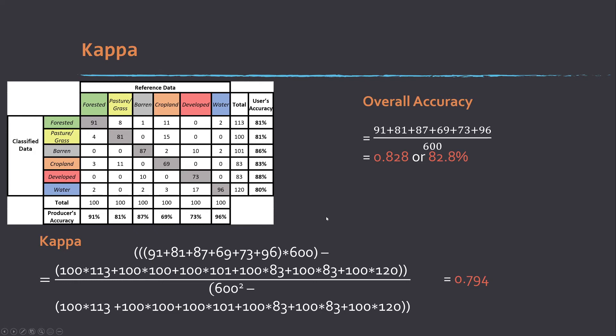This correction factor is just calculated using the row and column totals. Basically for each row and column, you multiply them together, so 100 times 113, and then you add each of those. So 100 times 113 plus 100 times 100 plus 100 times 101 plus 100 times 83 plus 100 times 83 plus 100 times 120. So that's how it creates this conversion there. And you see with that adjustment, we see a decrease relative to overall accuracy down to 0.794.